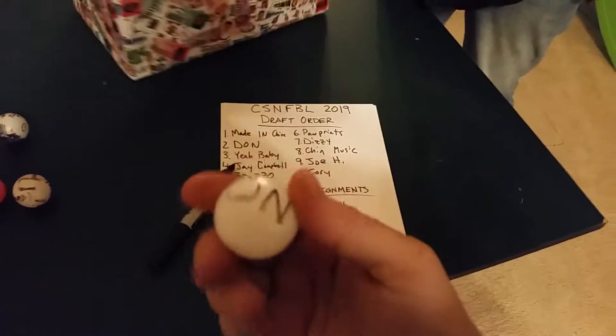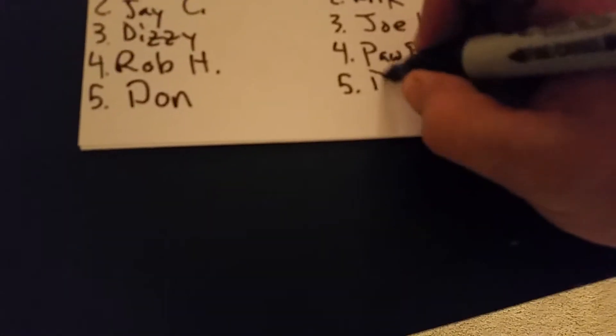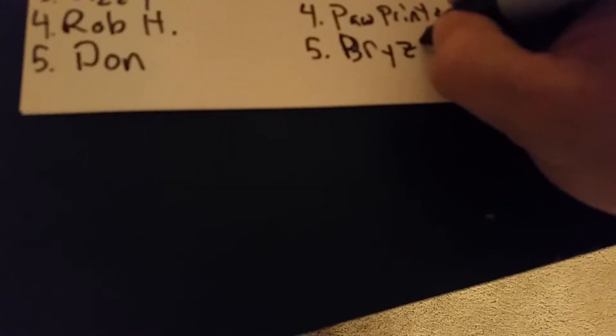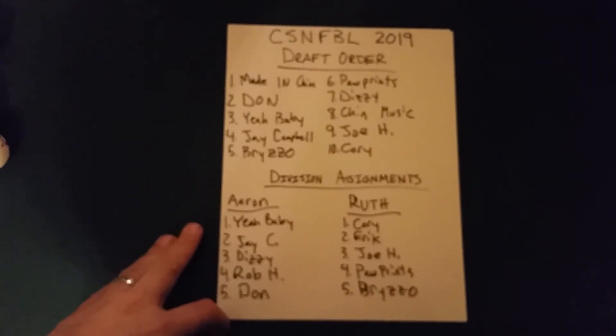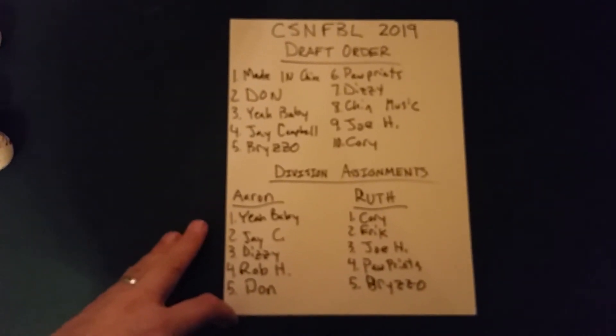Still in there — this is Don, that means I'm the last one, and Rizzo — it used to be Wrigleyville Ivy — R-Y-Z-Z-O. All right, so this is your 2019 CSN FBL draft order and division assignments.